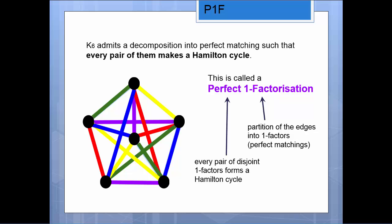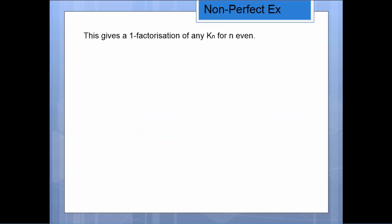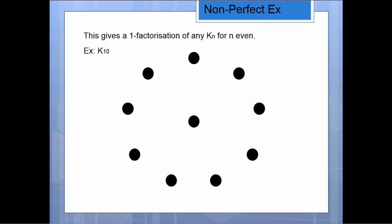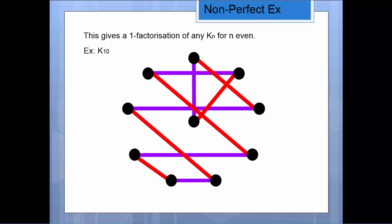Now I want to show you that you can easily get one factorizations which are not perfect. Let's take a look at the same exact construction for any even n. We'll just take K10. Here are ten vertices, and I've drawn one of the vertices in the center and nine of them around the outside. The purple perfect matching is a pretty obvious generalization. What we do is we take this and we just rotate it nine times, and we will get a one factorization for this graph K10. This will always work for a one factorization of Kn where n is even. Now the question is, is this going to be a perfect one factorization?